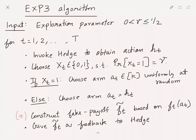Let's see formally how this algorithm looks. The algorithm takes in an exploration parameter gamma that lies between 0 and one-half. In each time step t, we invoke Hedge to obtain an action h_t. Additionally, we flip a Bernoulli random variable x_t with mean gamma — it takes value 1 with probability gamma and 0 otherwise.